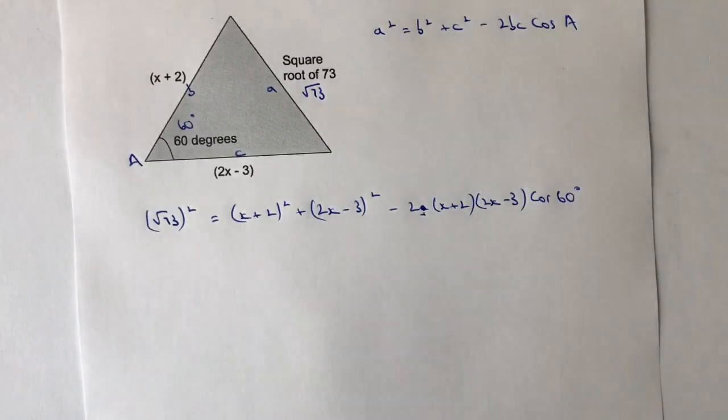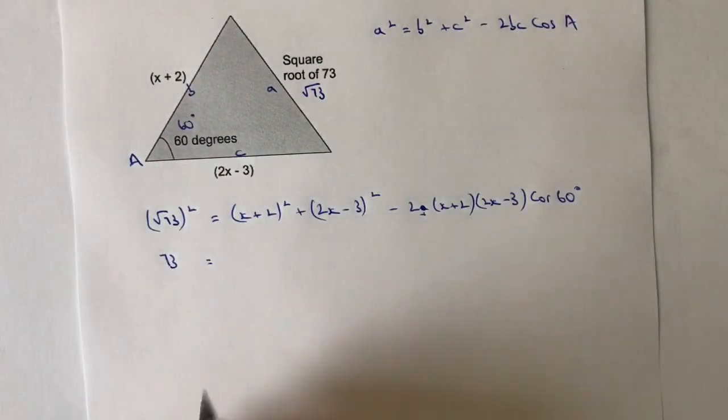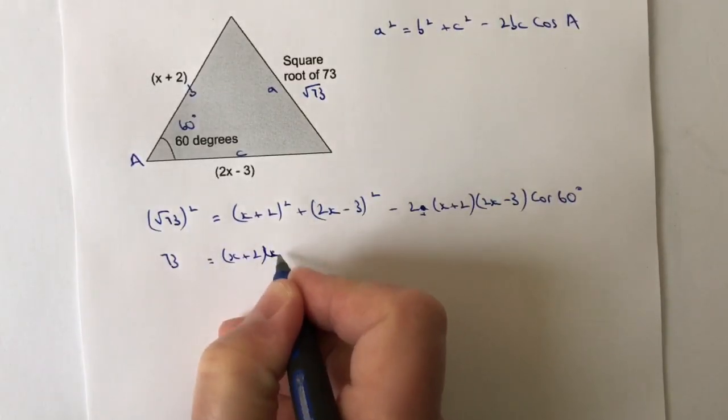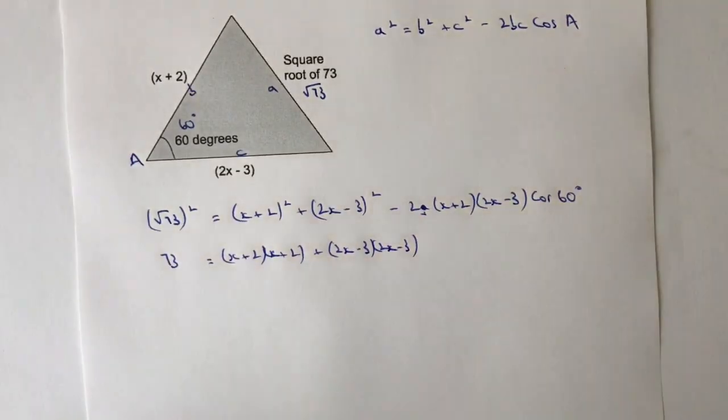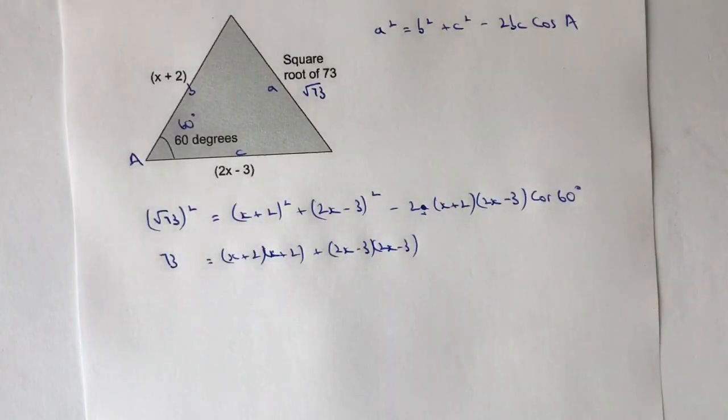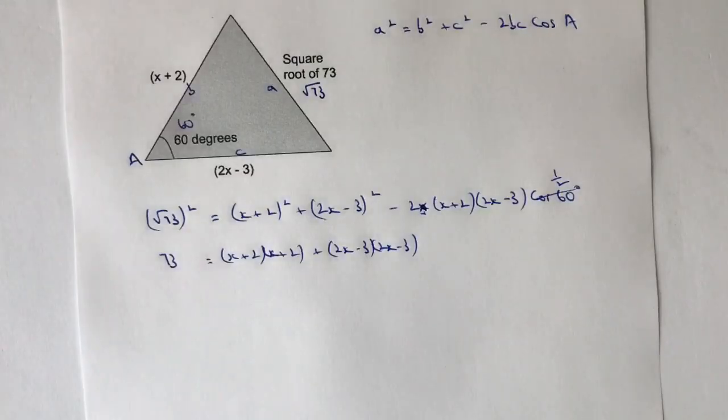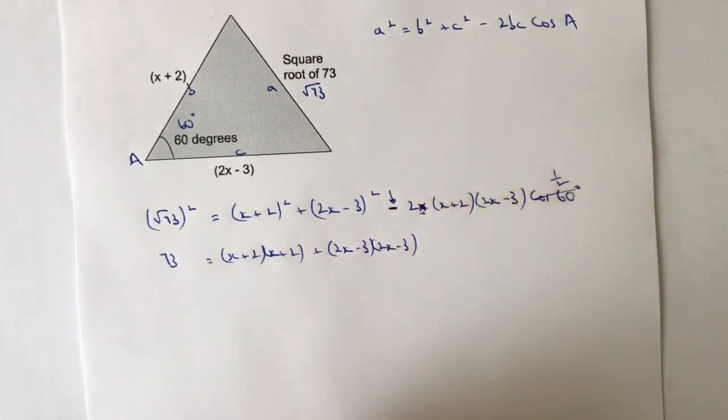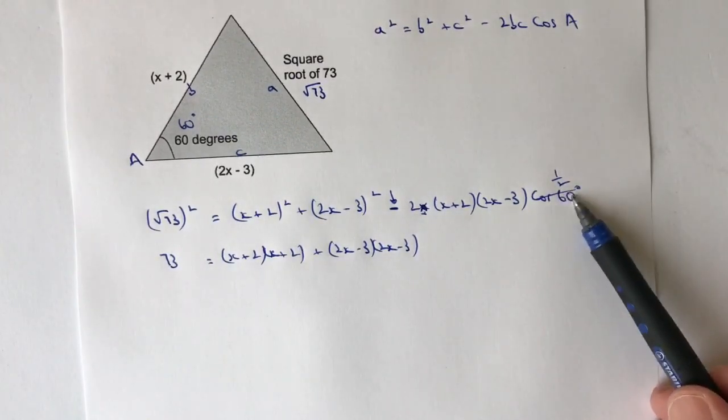So the first thing is I'm going to relieve the root 73 squared as just simply 73 because the two cancel themselves out. Then I've got x plus 2 times x plus 2, and I'm going to add that to 2x minus 3 times 2x minus 3. Then I've got 2. Now the interesting thing here is I've got 2 times something where the cosine of 60 degrees is actually a half. So I've got 2 times a half which is going to be 1, so I don't really need to worry about that.